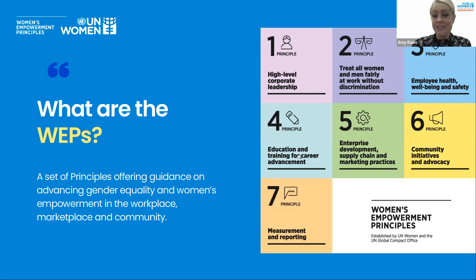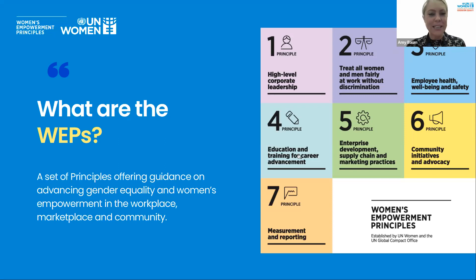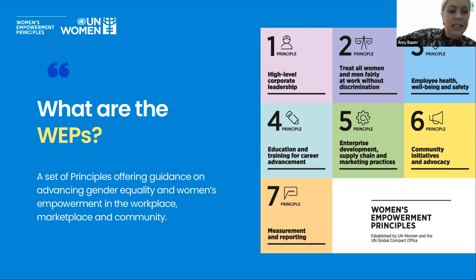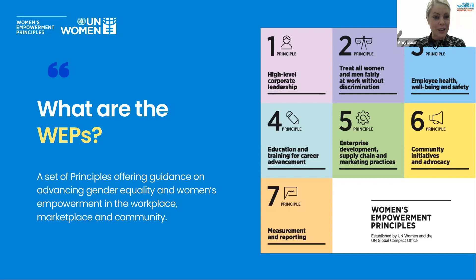Many of you are existing WEPs signatories and hopefully know this back and forth, but I'm just going to give a brief overview of what the WEPs are — our beloved seven principles. The WEPs are a set of principles and a framework offering guidance on advancing gender equality and women's empowerment, and becoming more responsible across the value chain as a business. We're not just looking at the C-suite or office places, but also factory floors, plantations, supply chains, and how you can sustain those efforts with monitoring and reporting.